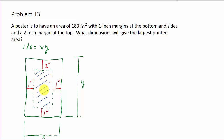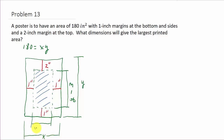Now we want to maximize the printed area. That area is length times width. This dimension is going to be y minus the two inch margin at the top minus the one inch margin at the bottom, so that's y minus three. And this dimension is x minus one inch minus one inch, so x minus two.